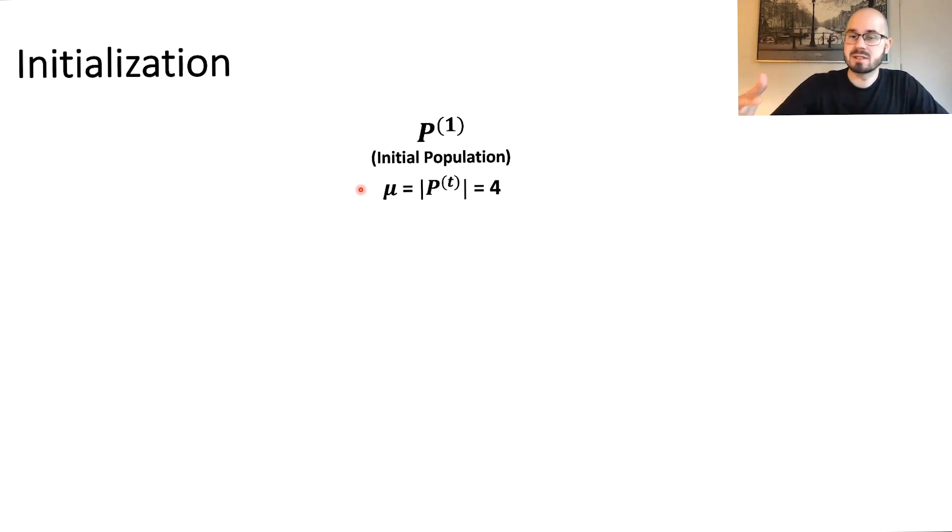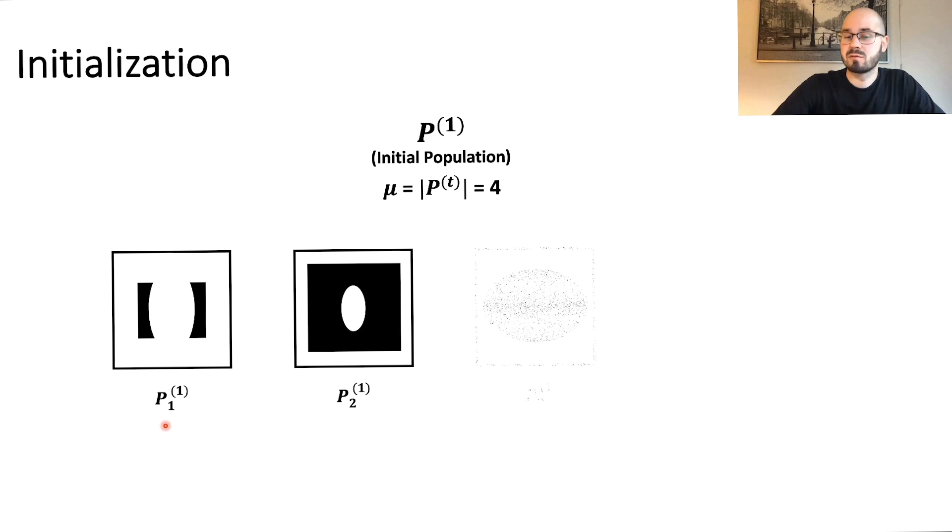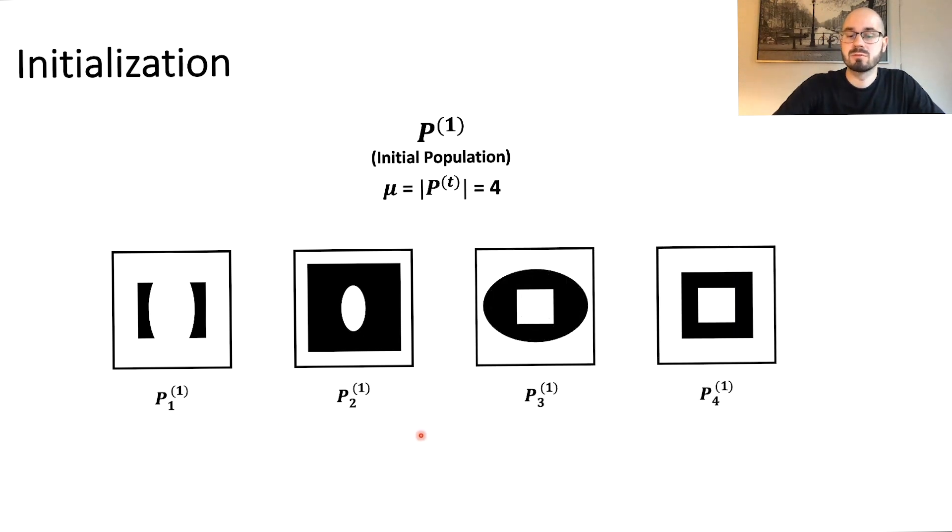One way of initializing is just randomly creating new individuals. So in this case we just randomly say take a rectangle or an ellipse, put some uniformly random width or heights together, do the same for the inner white shape, and this is our first individual of our p1. Now we just repeat this process and we create four random individuals to start with. They might not be necessarily really good, but it's just a starting point for our algorithm.